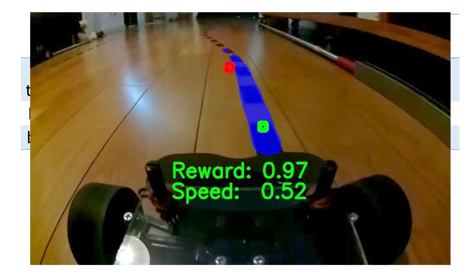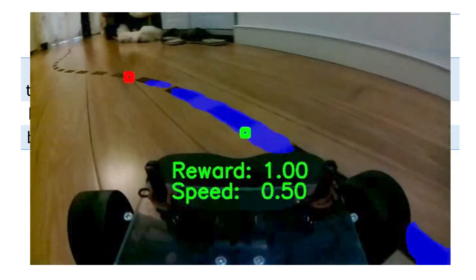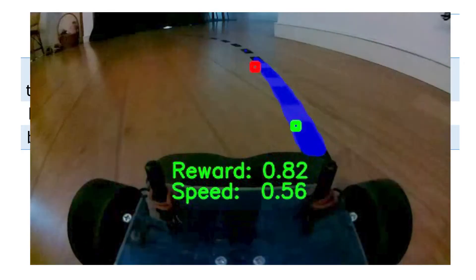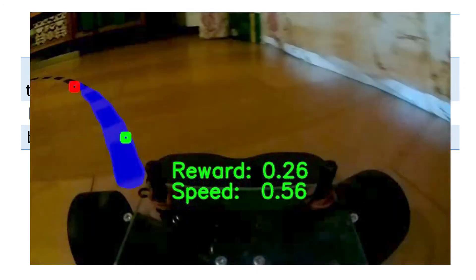The reward values are pretty good on the lightly curved sections. But on both the major curves, the reward values dip quite a bit. Actually, the major curves on this track are probably a little sharper than normal, so it's not really that surprising.